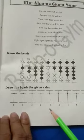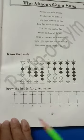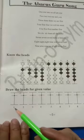Now page number 5. Draw the beads for the given value. That means this one is the value. You draw the beads according to the value.